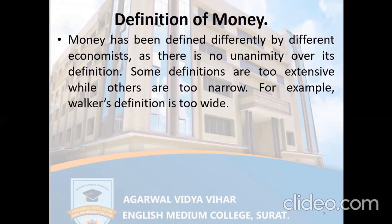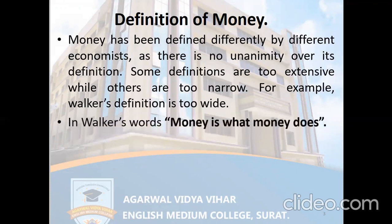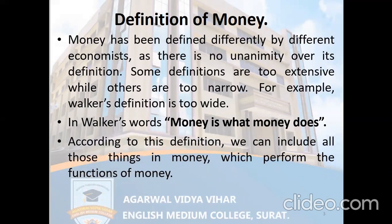For example, Walker's definition of money is very broad. In the words of Walker, 'money is what money does.' It seems a simple statement, but it is a very broad definition because anything that performs the functions of money will be considered as money. So as per this definition, we can include all those things in money which perform the functions of money — that is why it is considered a very broad definition.